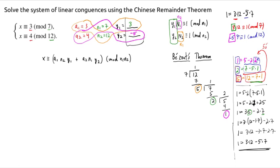That was all done over here with Bezout's theorem. Now we just plug in. So our x is going to be congruent to 3 times 12 times 3